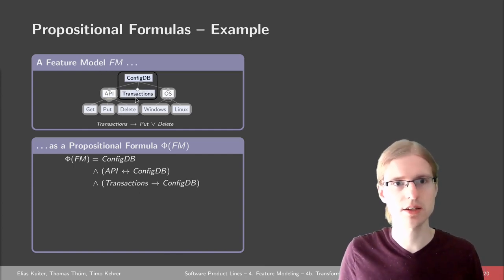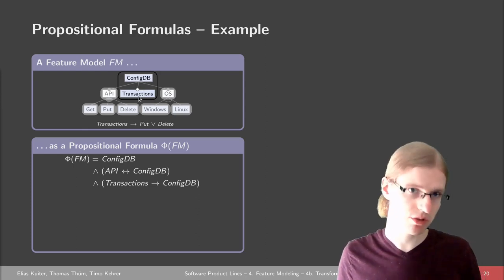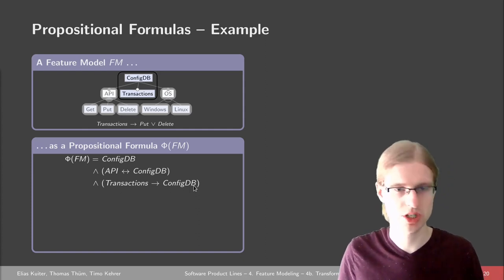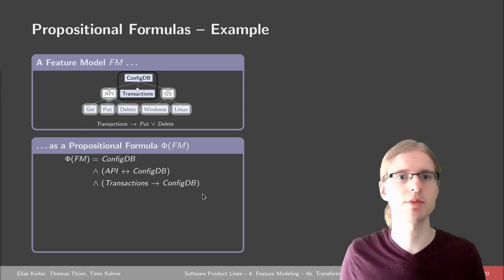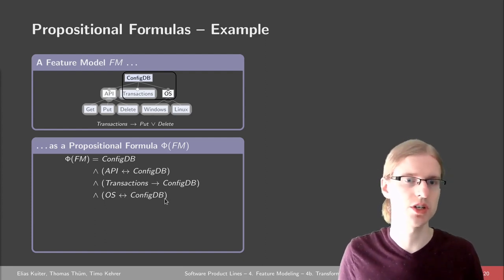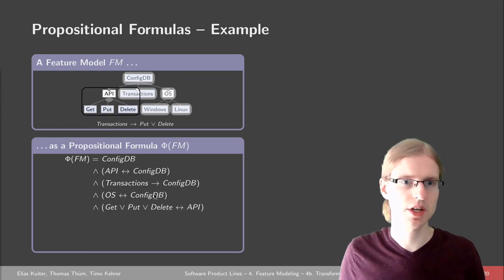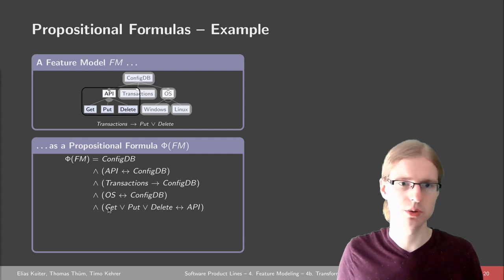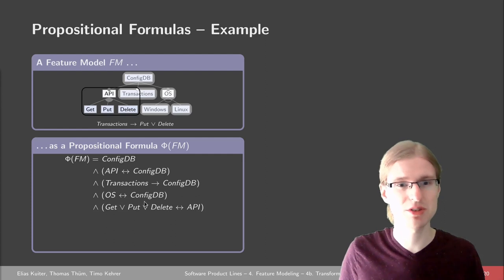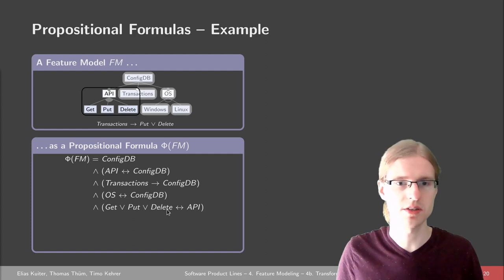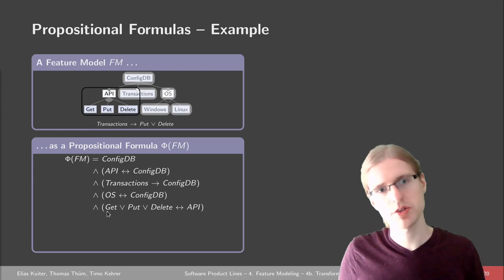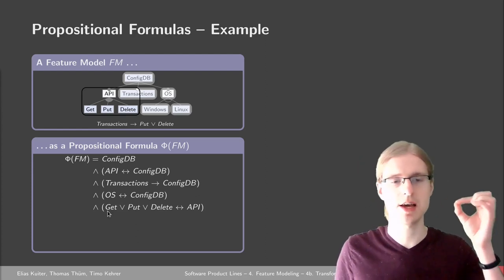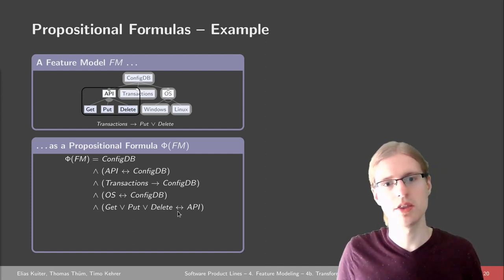For the OR group — get, put, or delete — we need a disjunction: if API is selected, at least one of these must be selected (inclusive or). Conversely, if get is selected then API must be selected, and this holds for each child feature — so each child implies the parent, making it a biconditional. For the OS feature's alternative group, it's similar: if windows or linux is selected, OS must be selected, and if OS is selected, windows or linux must be selected — again a biconditional.